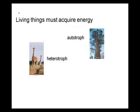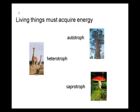Other organisms we call heterotrophs — 'hetero' means other. These organisms must have some other preformed carbon source for food, so heterotrophs have to eat something. Our last group we call saprotrophs, which are decomposers — very important in ecological systems. Saprotrophs include things like bacteria and fungi that break down dead, decaying organisms.